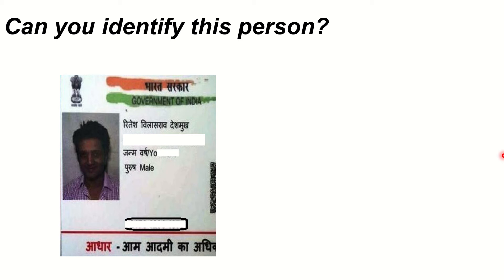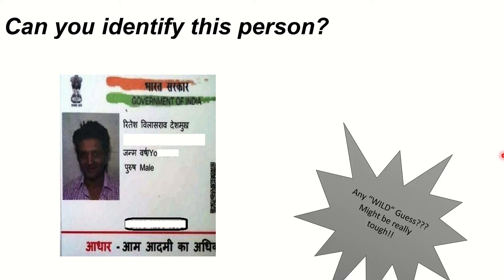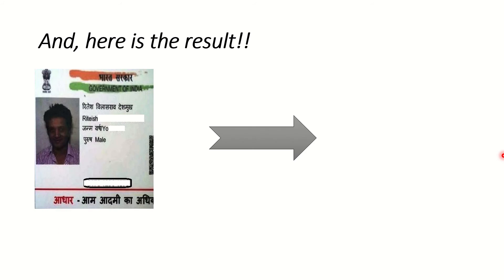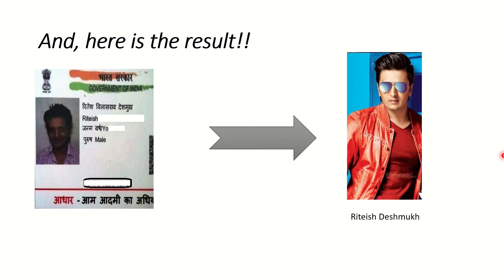Can you identify this person in the Aadhaar card which is displayed? He is a very famous personality, a celebrity. That's the case with most Aadhaar cards or any identity cards — the photographs will never look like what you are in person. This person is a very famous actor and he is Ritesh Deshmukh. He is very stylish in real life, but in the Aadhaar photograph it never looks like that.